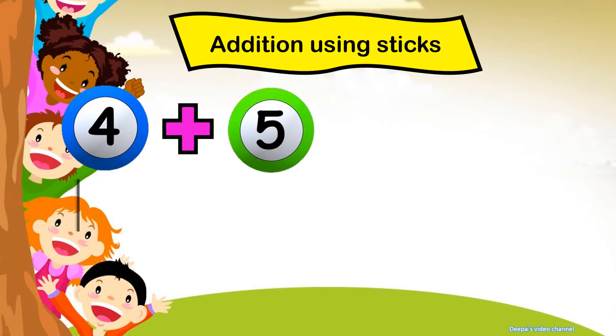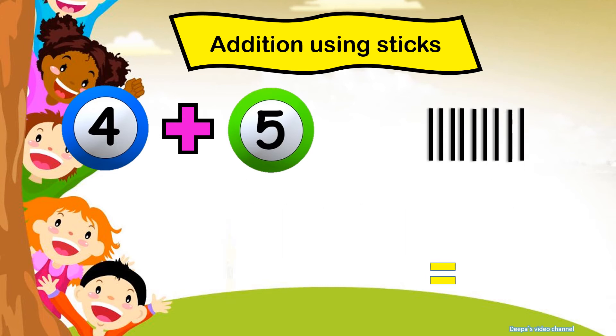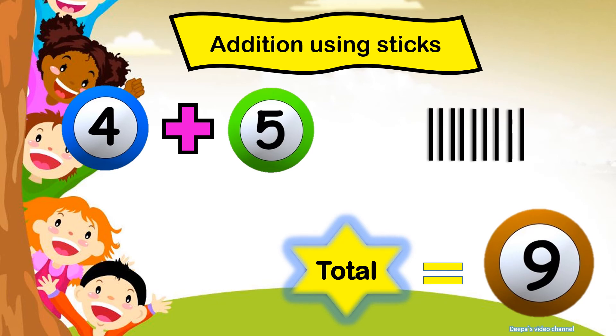Addition using sticks. Put four sticks under the number four. Put five sticks under the number five. The total number of sticks are one, two, three, four, five, six, seven, eight, nine. The answer is nine.